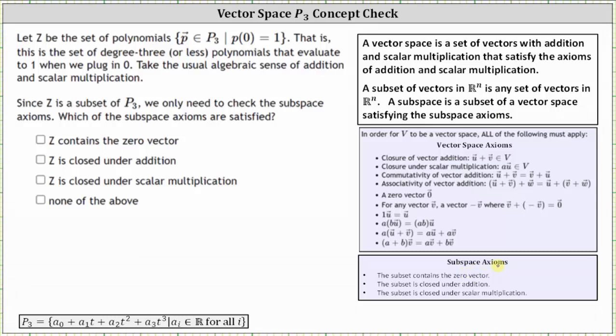For this problem, we're told to let Z be the set of polynomials in P3 where P(0) equals 1. That is, this is the set of degree 3 or less polynomials that evaluate to 1 when we plug in 0. Take the usual algebraic sense of addition and scalar multiplication.